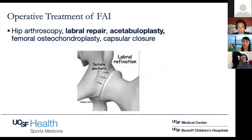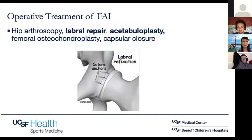For the labral repair portion of the procedure, we typically use suture anchors — about 1.4 millimeters are the ones I use. At the same time, if indicated and you need to trim their pincer lesion, you can do the acetabuloplasty. For patients with a pretty normal lateral center edge angle — under about 27 — I don't do a lot of rim trimming; I basically just freshen it up to create a fresh bony bed to repair to.